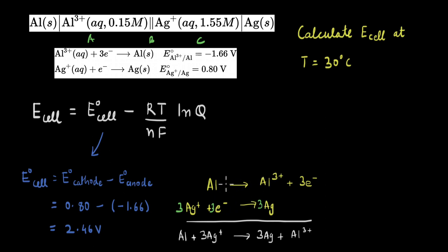Now, looking at the cell reaction, we know that here, the number of electrons that have transferred, that is the coefficient here, is 3. If we look at these values, R is the universal gas constant, and we know its value. T is the temperature in Kelvin, and because this is at 30 degrees, for Kelvin, we will add 273 to it.